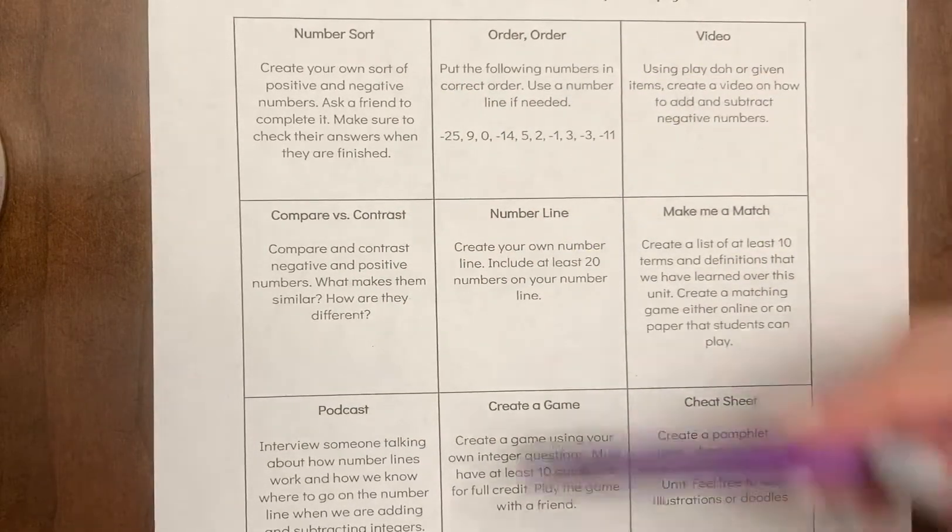It says play tic-tac-toe, get three in a row, and complete this project. There are nine boxes. You're going to choose three of them, and you're going to choose three that are in a row, whether it's going down, across, or even on an angle. As long as you're choosing three in a row, you're completing it, and whatever it is you complete, you need to attach to this assignment.